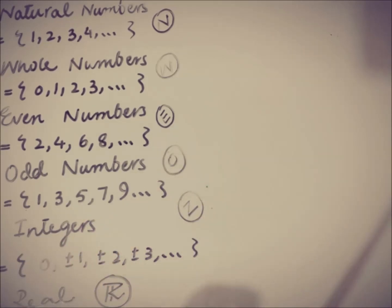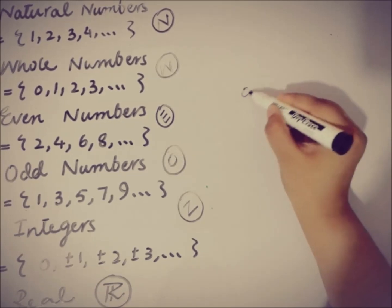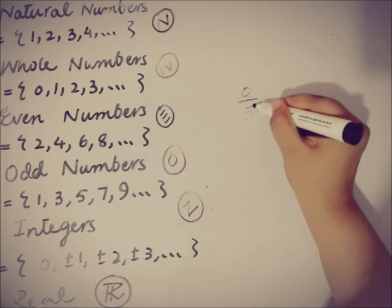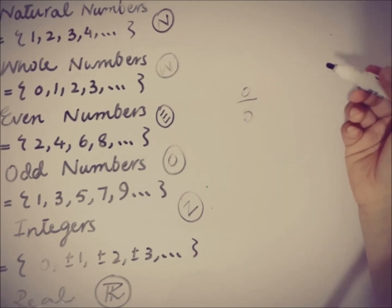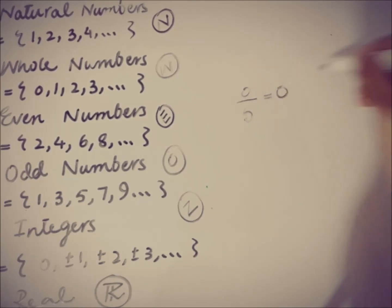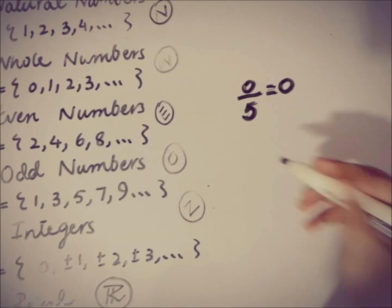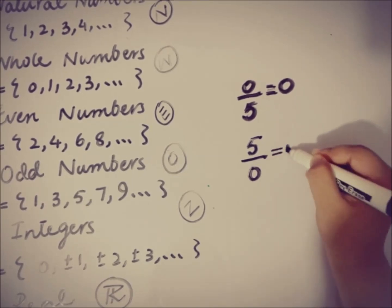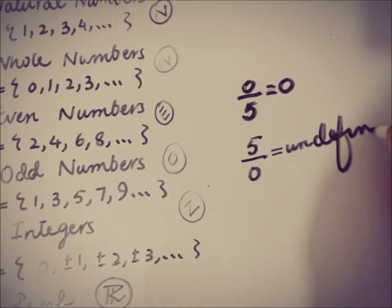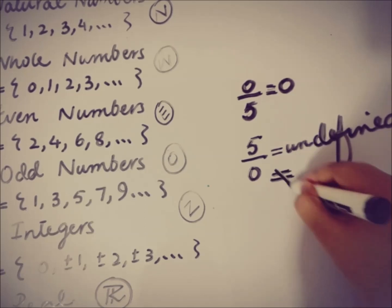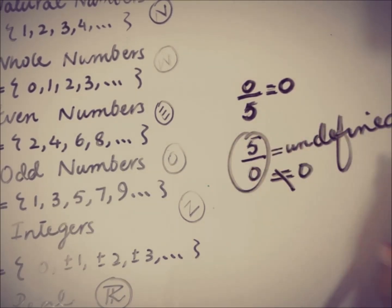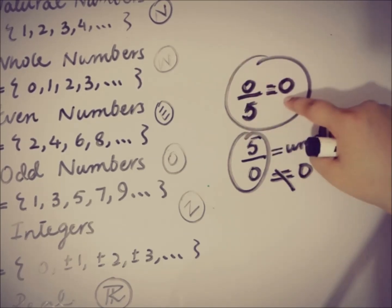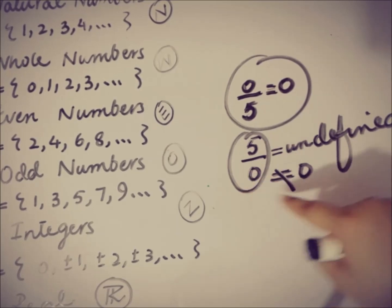Now we'll talk about the two main properties of zero. The very first is: whenever zero is divided by any number — for example, zero divided by 5 — the result is always zero. But when any number is divided by zero, the result is undefined. So you have to consider this: zero divided by any number gives zero, and any number divided by zero is undefined.